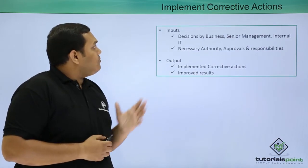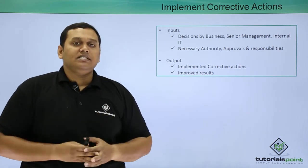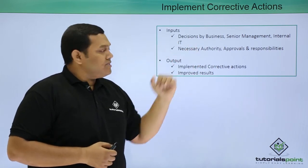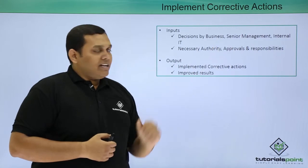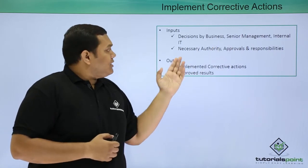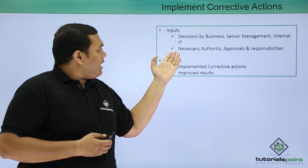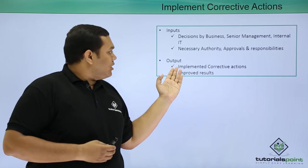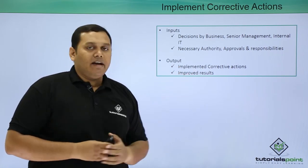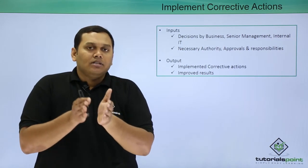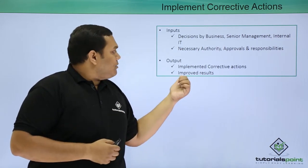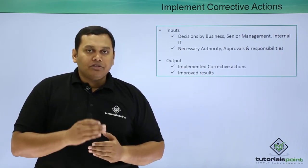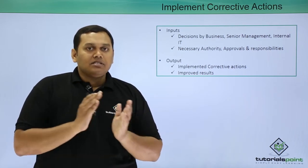The last step is implement corrective actions. Based on all information from the six preceding steps, the inputs are decisions by businesses, senior management, or internal IT, and necessary authority approvals. The output is implemented corrective actions, and improved results can be achieved using these seven steps. The next video will discuss metrics, roles, and responsibilities in continual service improvement.